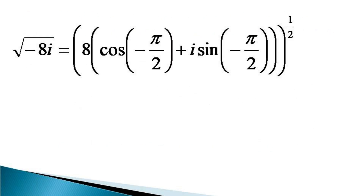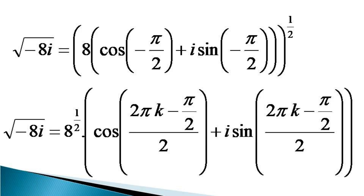Using this formula, our square root becomes equal to 8^(1/2) into cos[(2πk − π/2)/2] + i sin[(2πk − π/2)/2].